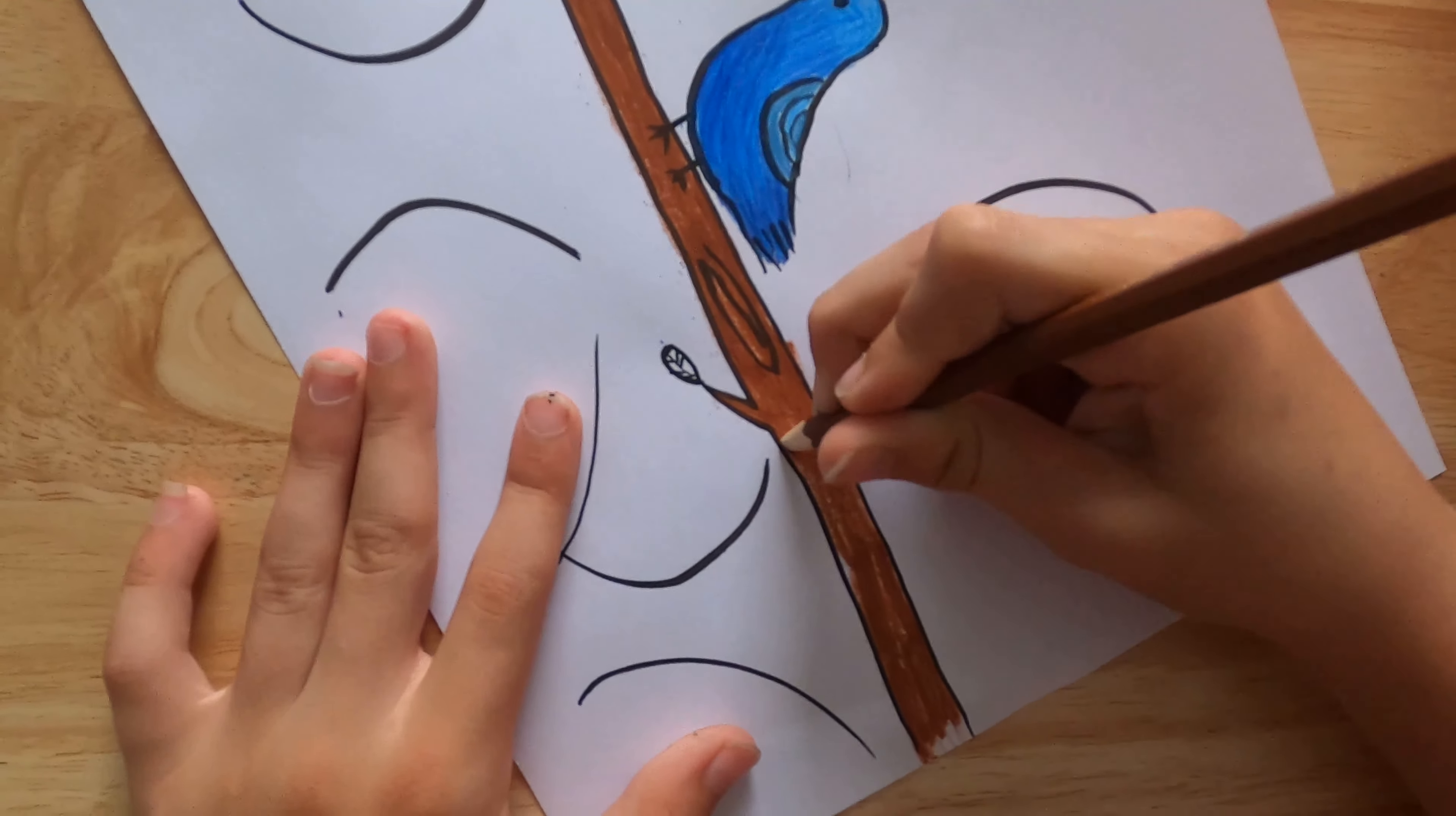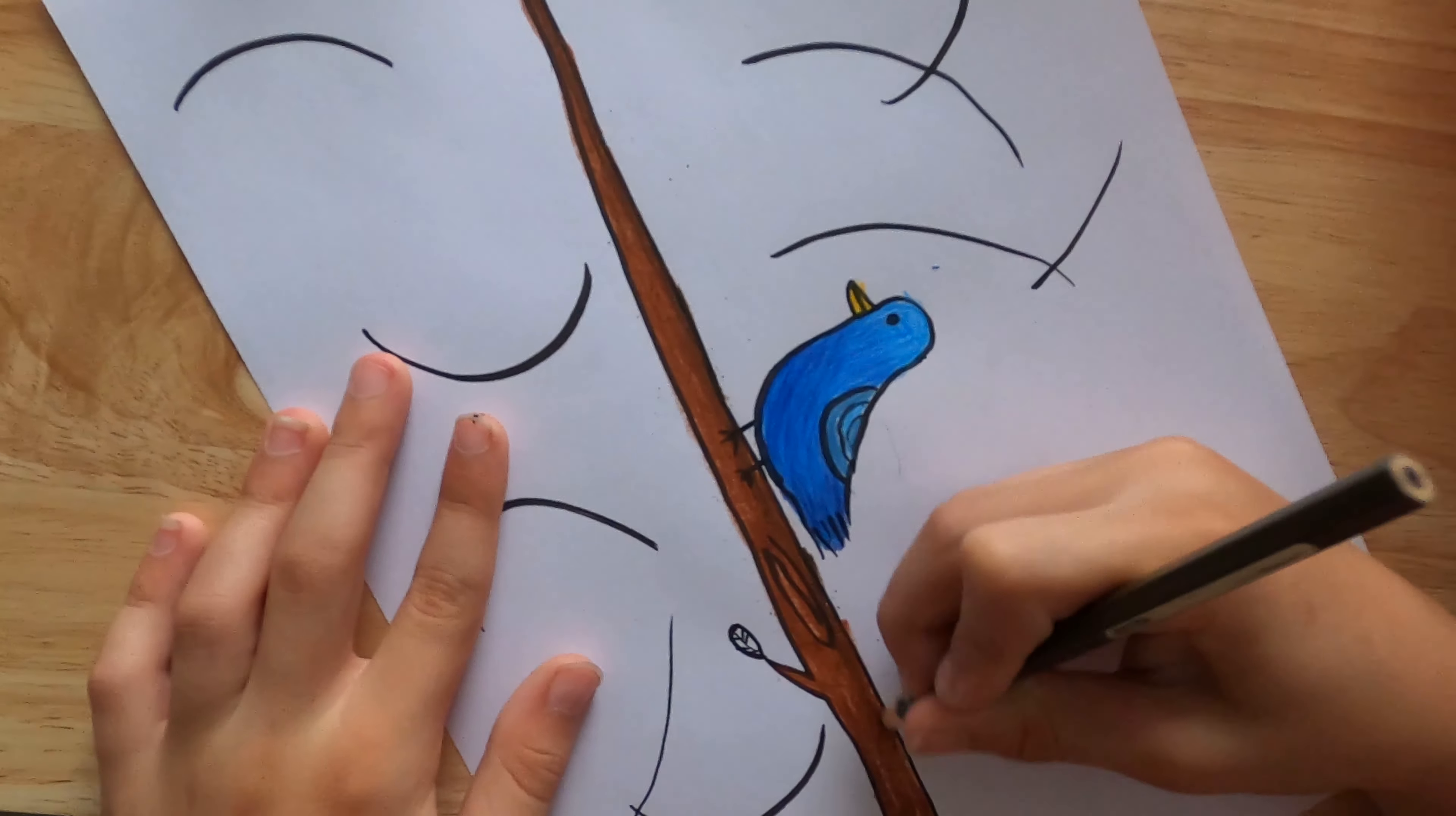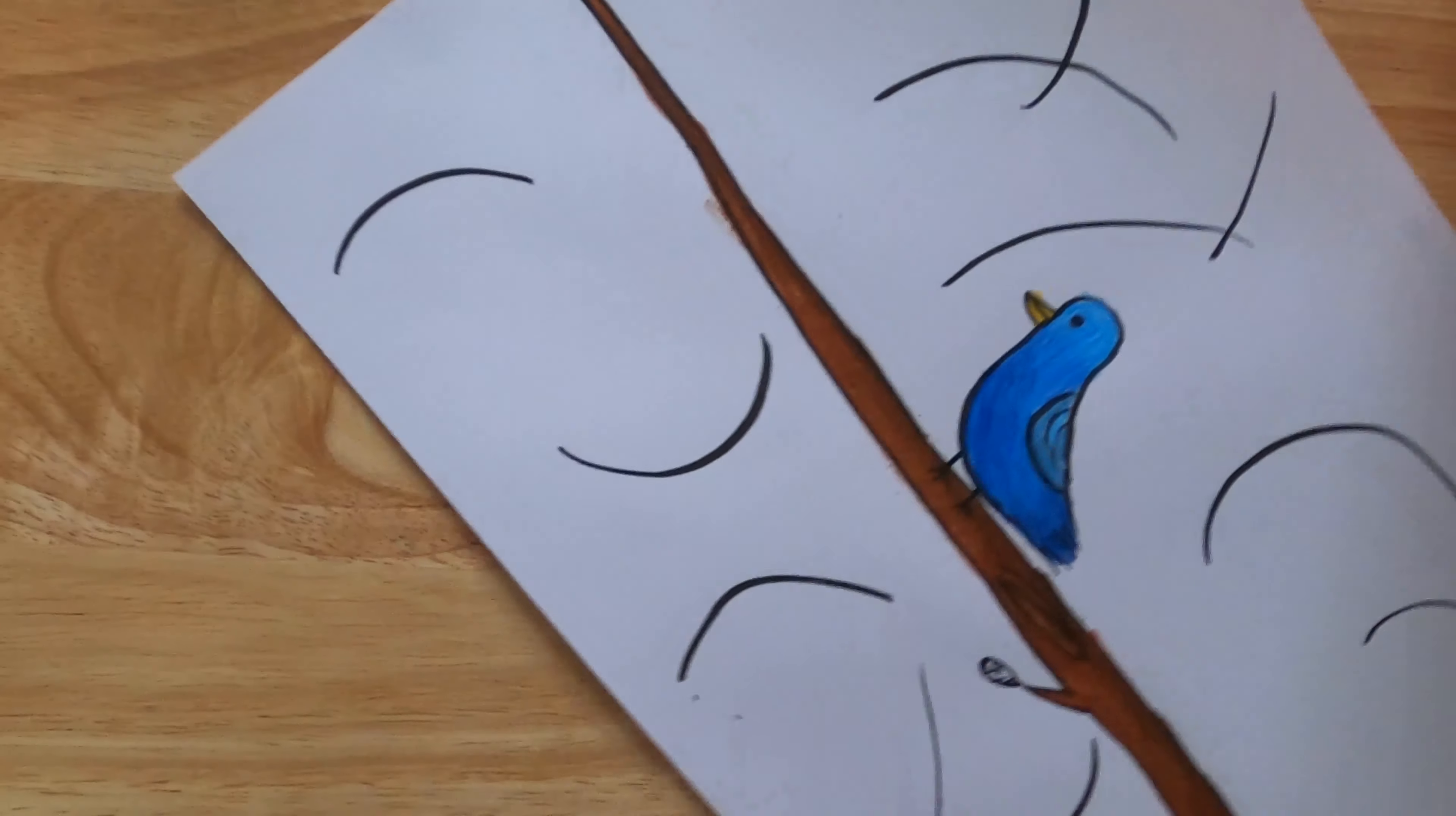Once you've finished that, get a darker brown and just do the top. Then, as we did, just fade out. And there you have it, there's your trunk.